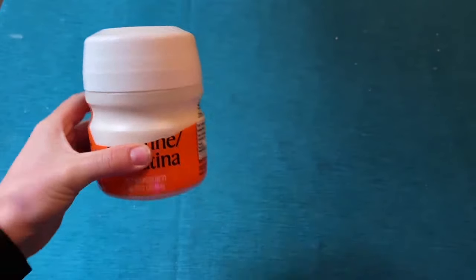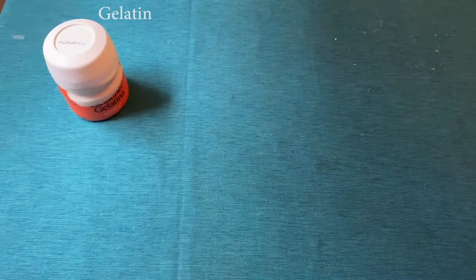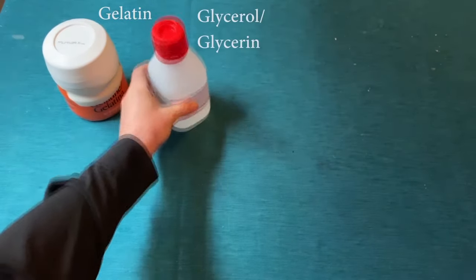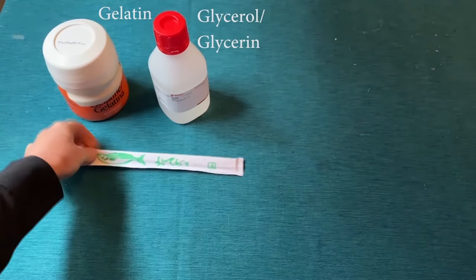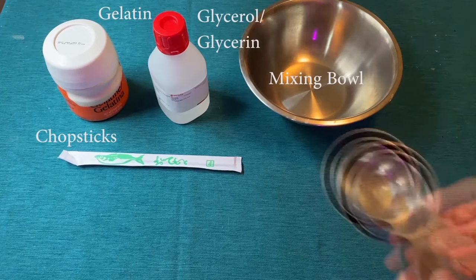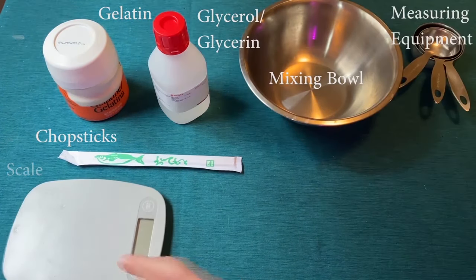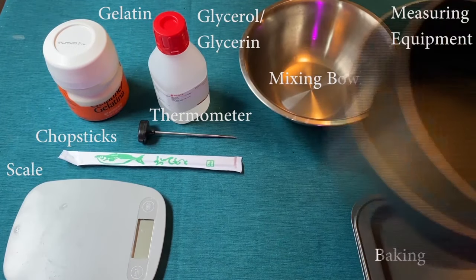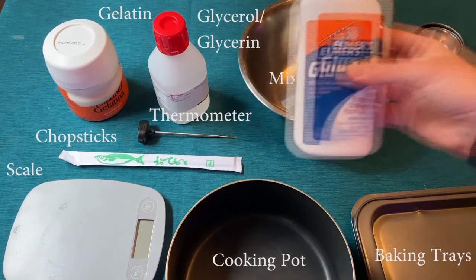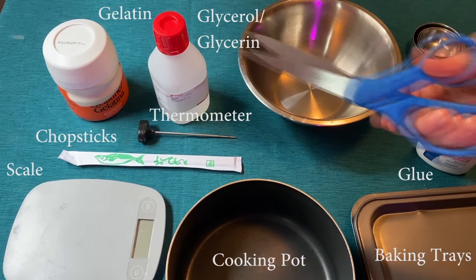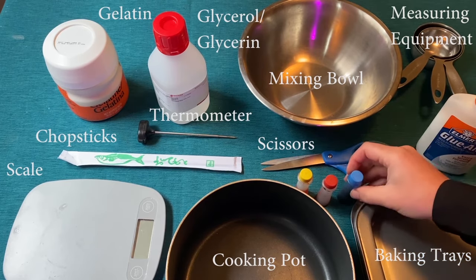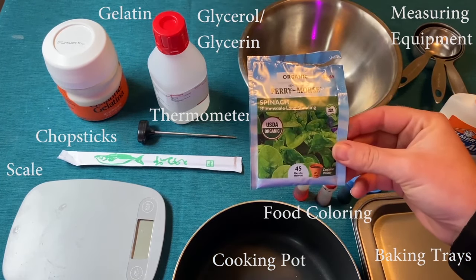To create your bioplastic, you'll need the following items: gelatin, which can be purchased at the grocery store; glycerin or glycerol, which can be bought at the drugstore; chopsticks; a mixing bowl; measuring equipment; a kitchen scale; a cooking thermometer; three baking trays; a cooking pot; glue; scissors; food coloring or natural dye; and gardening seeds or chia seeds.